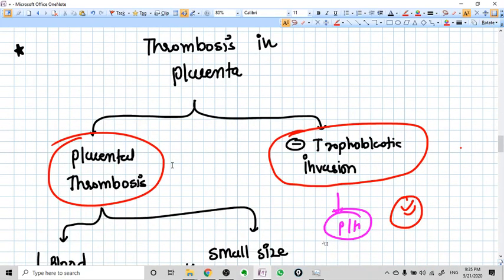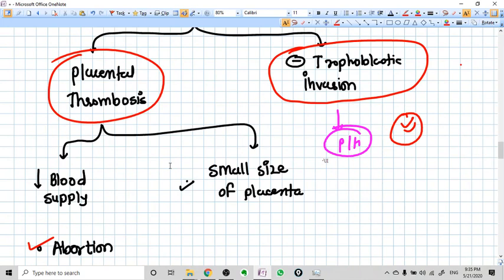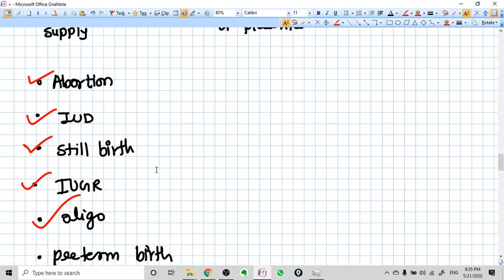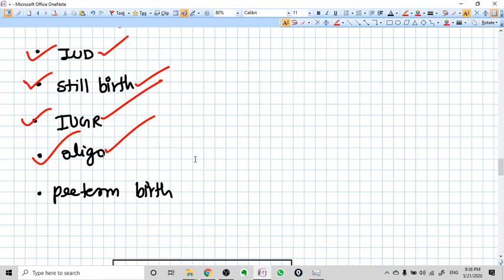So, thrombosis in placenta. Now, let's come to our point of interest. Thrombosis in placenta happens. That's why the blood supply to the fetus will be less. And because the blood supply to the fetus will be less, there is an incidence of abortion, IUD, stillbirth, IUGR, oligohydramnios, preterm birth.